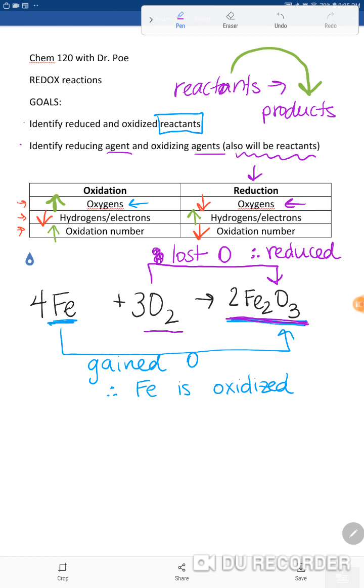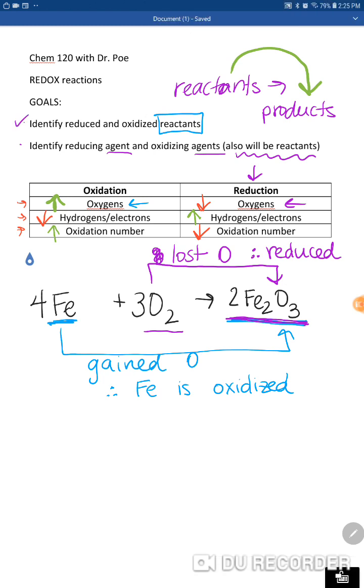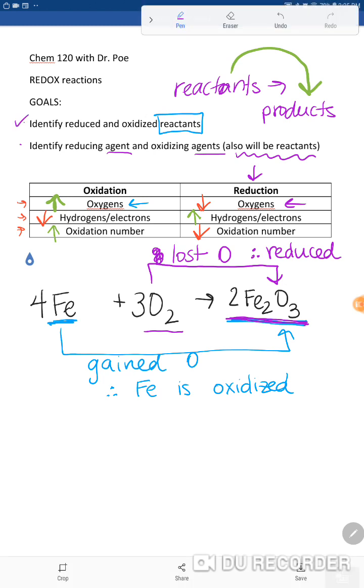So that's how you identify reduced and oxidized reactants. There's different rules for this—if it's gaining H's, it's reduction; if it's losing H's, it's oxidation. Or you could look at oxidation number, there's many videos on oxidation number if you want to clarify that. So the next tricky thing is that we need to look at identifying reducing agents and oxidizing agents.